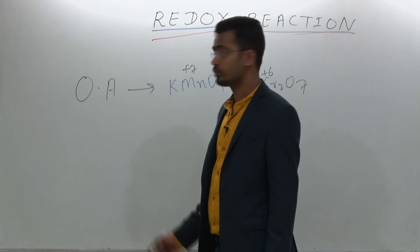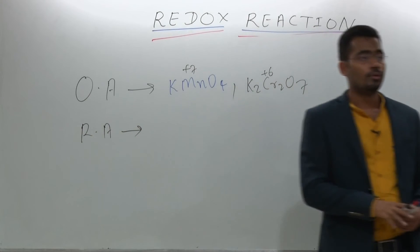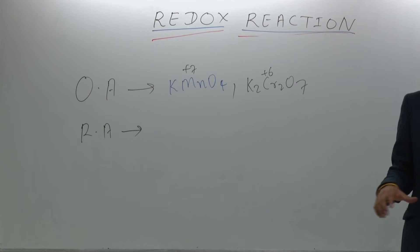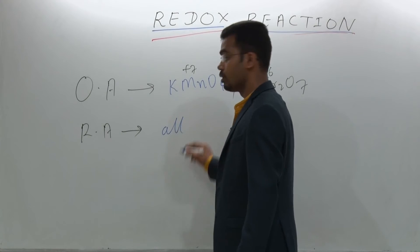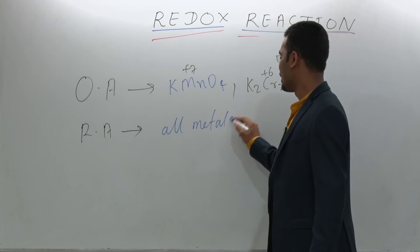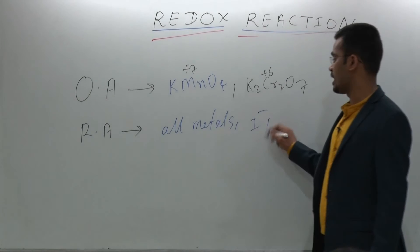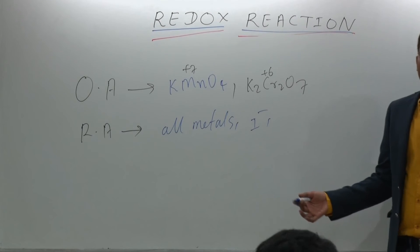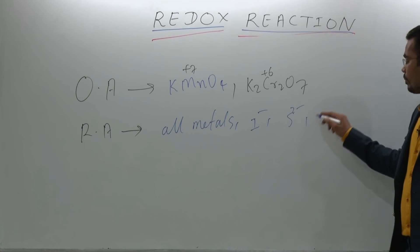Now, reducing agents. A reducing agent is a compound which exists in the lowest oxidation number. For example, all metals are by birth reducing agents. Other examples which exist in the lowest oxidation state include I⁻, S²⁻, and N³⁻.